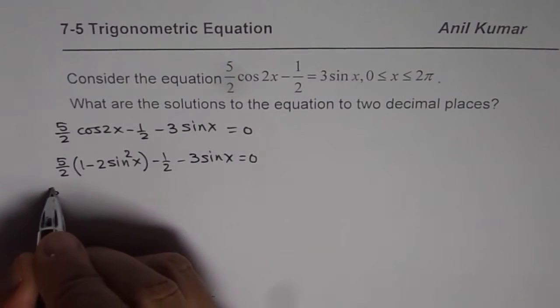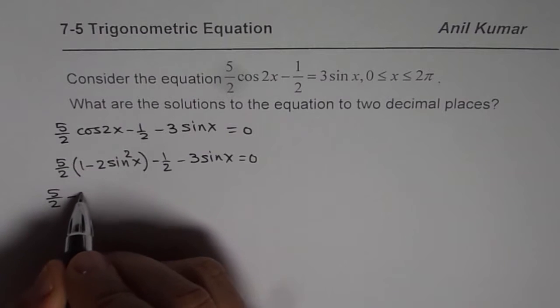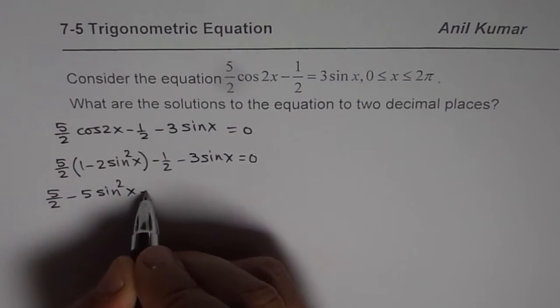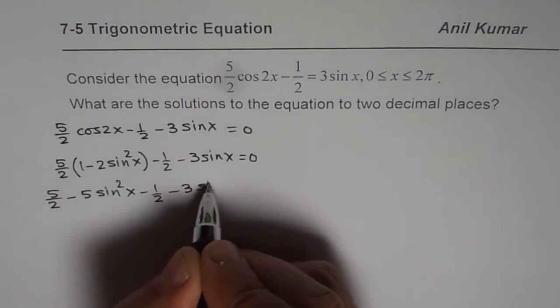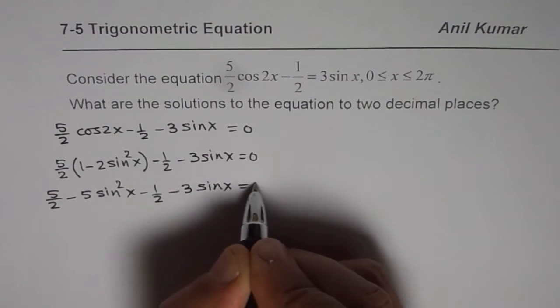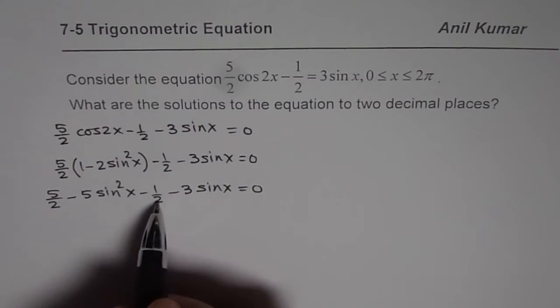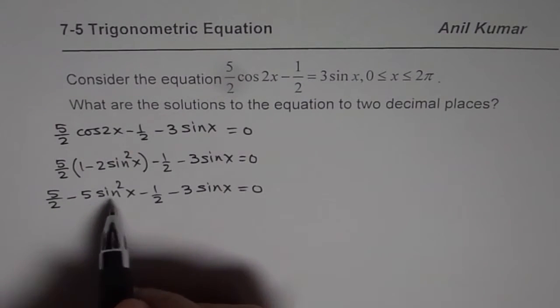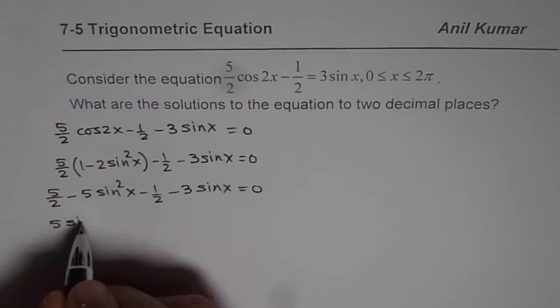Let's open the brackets. We get 5/2 - 5sin²(x) and we have -1/2 - 3sin(x) equals 0. We can combine these terms, but at the same time, I will multiply by negative since all are negative terms for us.